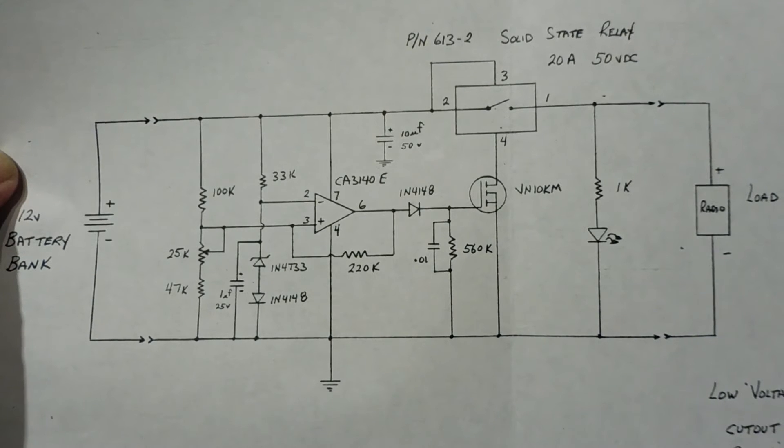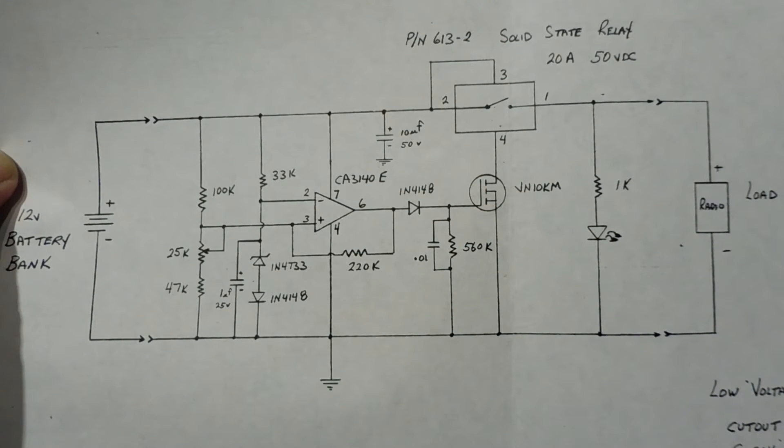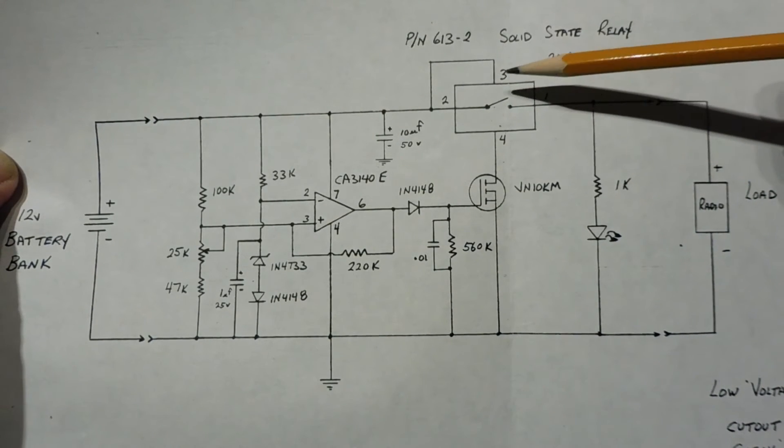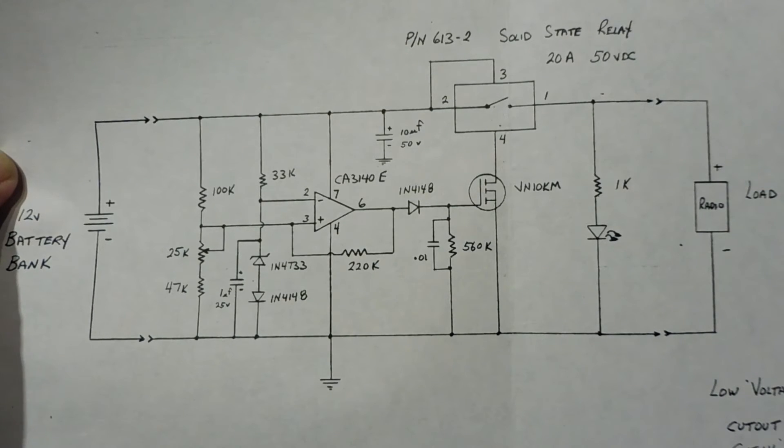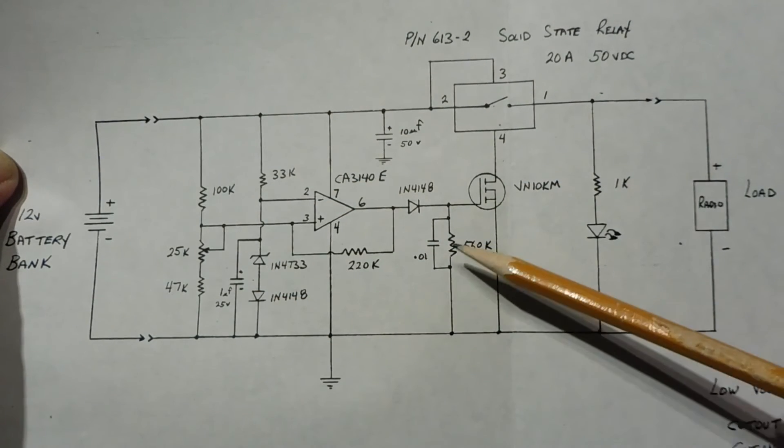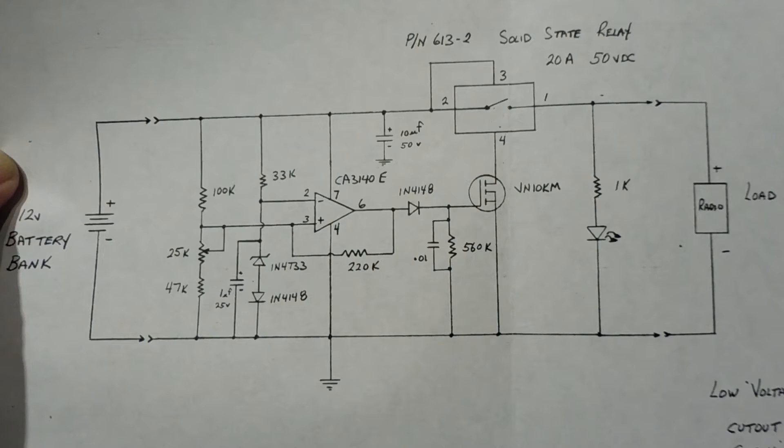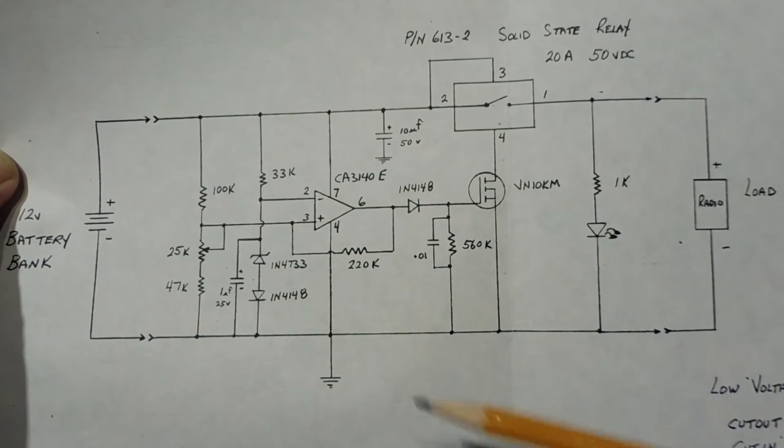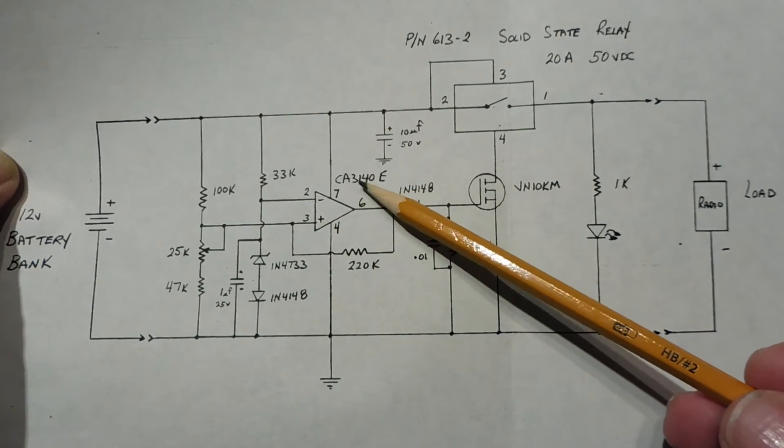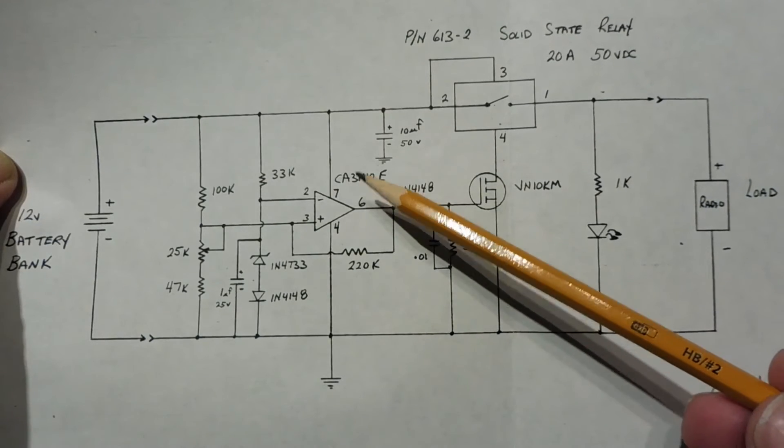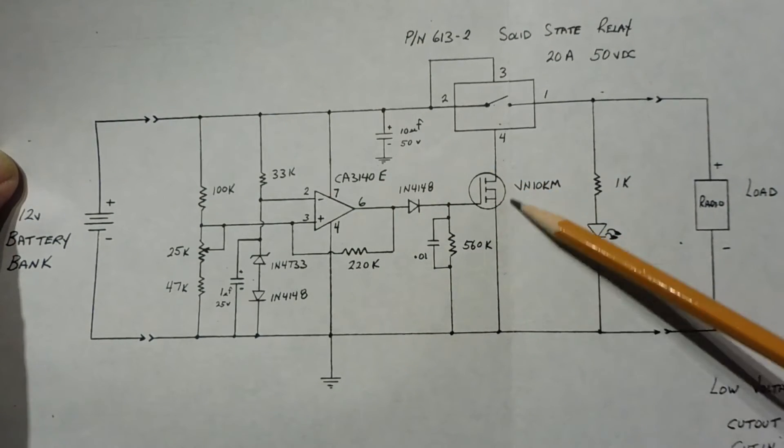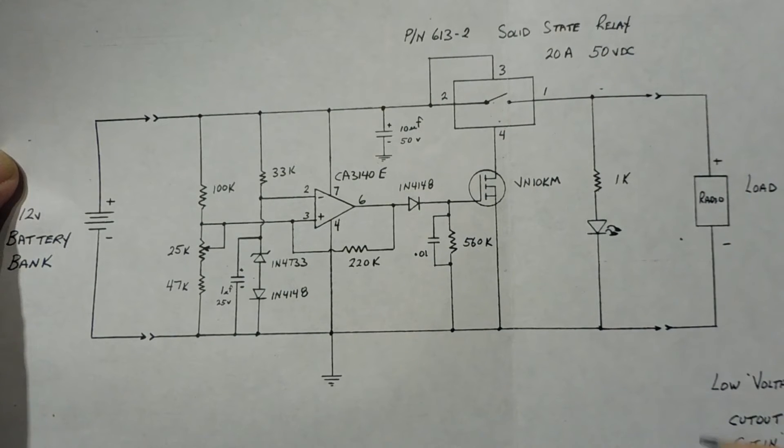Now when the voltage on the batteries drop below 10 volts, this relay will open and disconnect the batteries to the load. Now this circuitry here is what detects the voltage drop. So when the voltage drops below 10 volts, there's a comparator circuit using a CE3140 op-amp, which will detect the drop, turn off this MOSFET transistor, which will turn off the relay, which is driving the load.